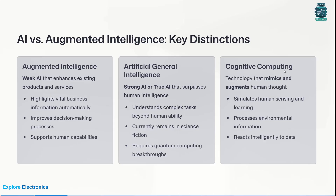What is cognitive computing? Cognitive computing is a technology that mimics and augments human thought. It understands human-sensitive things, learns from experiences, and gives results. It simulates the human sensing and learning process — it understands environmental information, processes the data, and reacts intelligently. Compared to augmented intelligence, artificial general intelligence is stronger, and cognitive computing is much stronger than that.